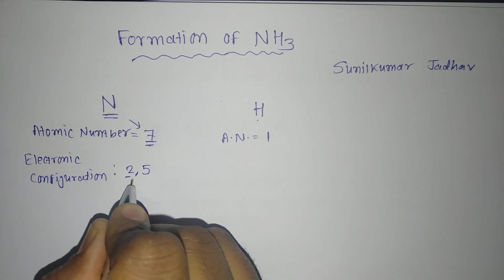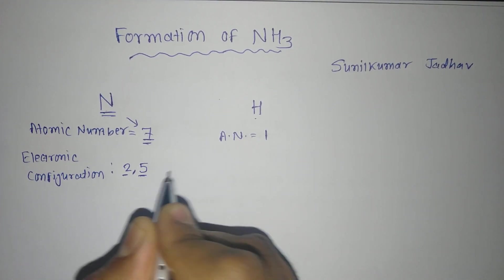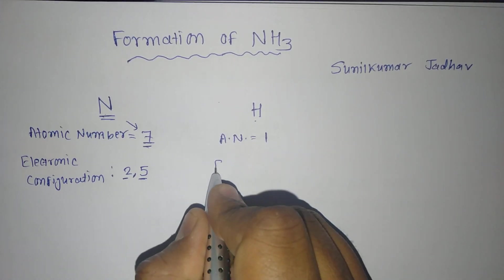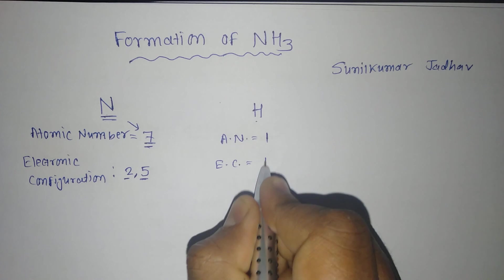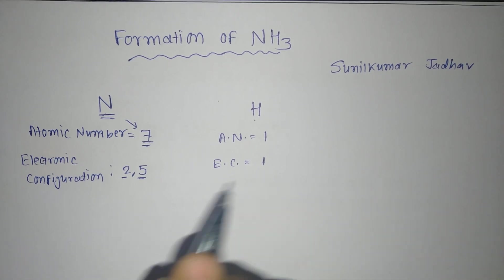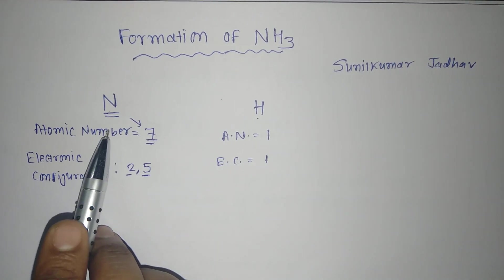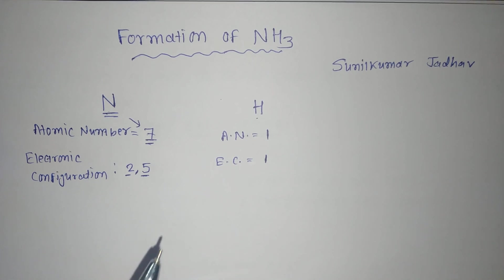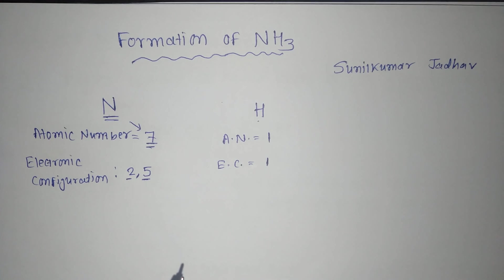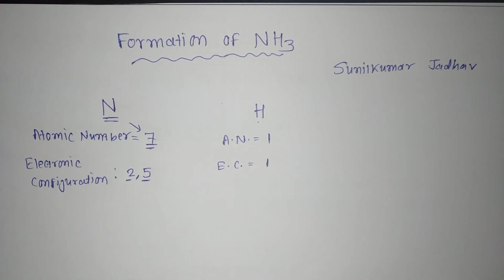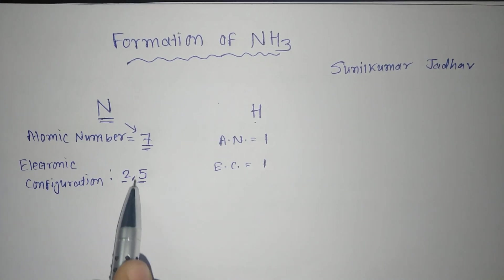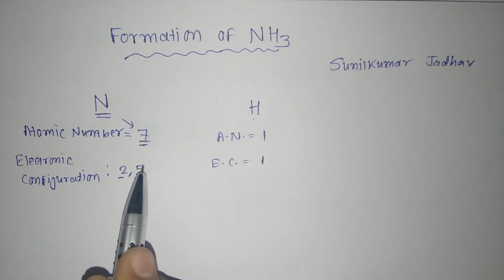First shell there are 2 electrons and the second shell there are 5 number of electrons. While if you are talking about hydrogen, it is having atomic number 1, so its electronic configuration will be only 1. It has only 1 orbit and it has 1 number of electrons. Now if we are talking about this nitrogen, then it has to complete the octet. It has to gain 3 number of electrons to make its outermost electron to be 8.